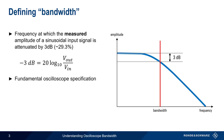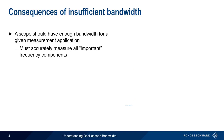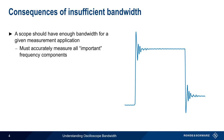Bandwidth is the most fundamental oscilloscope specification. It's specified in Hz, and modern digital oscilloscopes typically have bandwidths in the range of about 100 MHz up to many GHz. The bandwidth of an oscilloscope must match the requirements of a given measurement application — that is, the scope must measure all of the important frequency components of a signal with sufficient accuracy. We'll discuss this in much more detail later in the presentation.